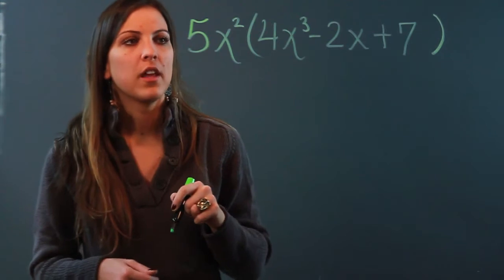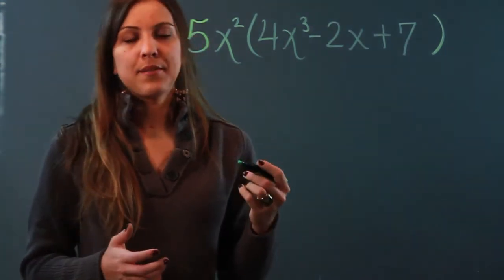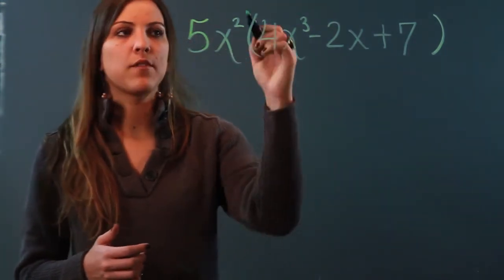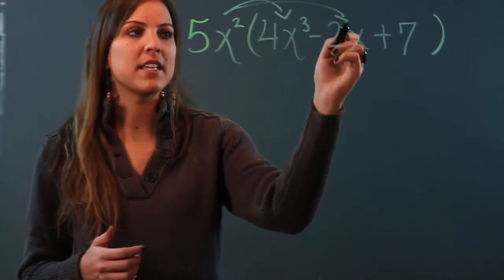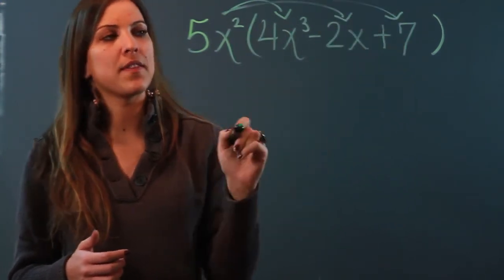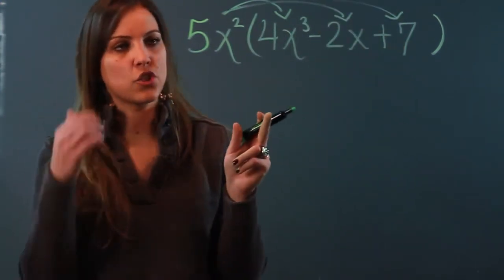All right, here's what I do. The distributive property says that I have to multiply the term that's outside of the parentheses by each term that's inside of the parentheses. And in the parentheses I have three terms since it's a trinomial.